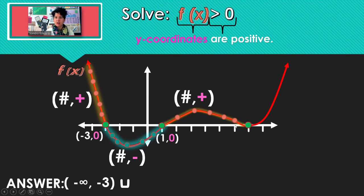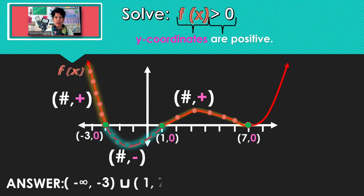Until we get to 7, because at x equals 7 the y-coordinate is back to 0, and we only want positive y-coordinates. So our solution — we can add on to that — all of the x's between 1 and 7. Notice I'm using parentheses because we're leaving out the numbers 1 and 7.